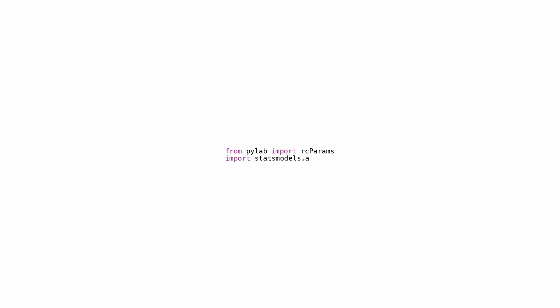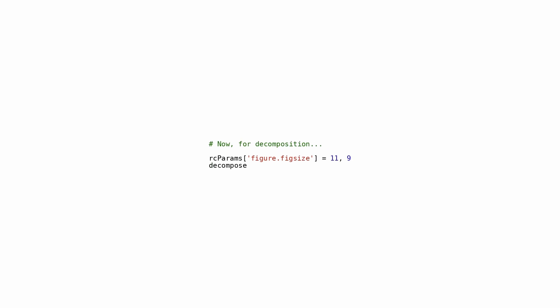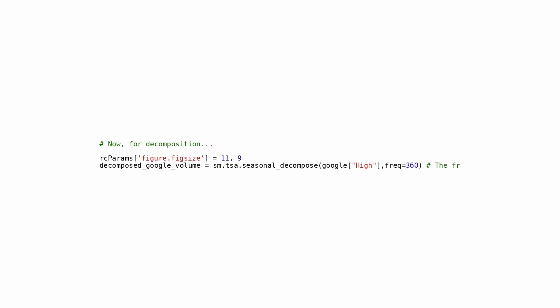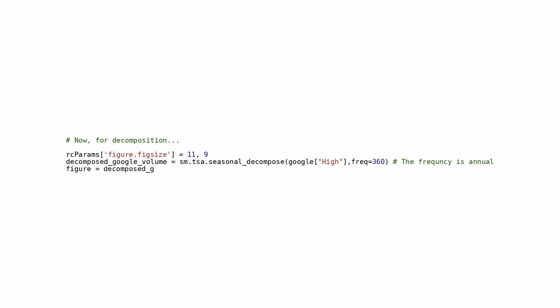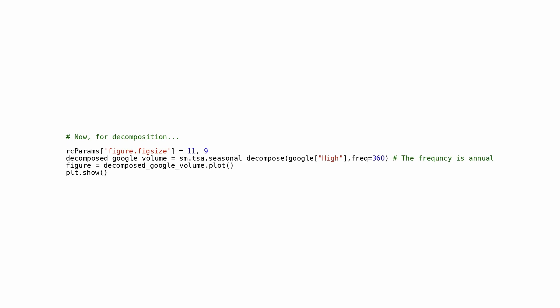A code snippet sets up a data analysis task in Python using two libraries: PyLab and StatsModels. The rcParams module is imported from PyLab, which contains default styles and settings for Matplotlib plots. By importing rcParams, the user can modify figure size, fonts, and line widths globally. The API module from the StatsModels library is imported with the alias sm. StatsModels provides tools for statistical modeling, testing, and analysis. This code snippet sets plot parameters for data visualization and imports statistical functions. It analyzes the high-price column of Google stock data for time series analysis, sets the figure to 11 by 9 inches, and uses sm.tsa.seasonal_decompose to decompose the time series into seasonal, trend, and residual components.